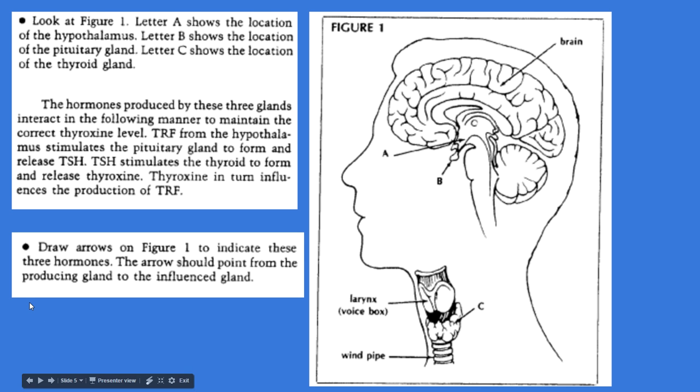It asks you to draw arrows on Figure 1 then, to indicate these three hormones. So I'm going to help you with Figure 1, and then as you read carefully through the rest of it, you'll be able to do Figure 2 and Figure 3. So the arrow should point from the producing gland to the influence gland. So the first arrow that I drew here is from A, the hypothalamus, to B, the pituitary. So that red arrow shows that that is the producing going to the influencing gland. So draw that arrow and then label that with TRF.